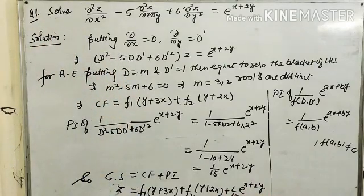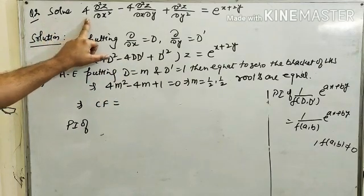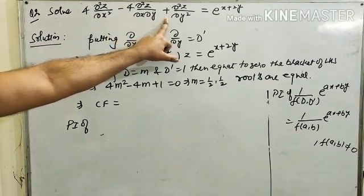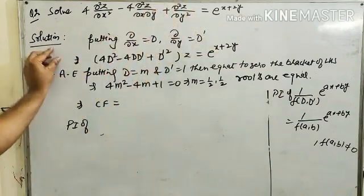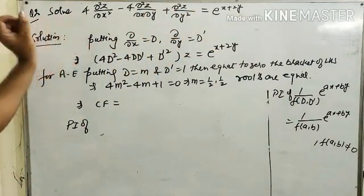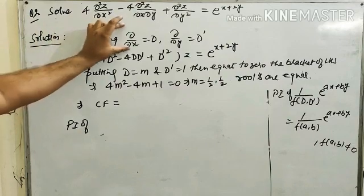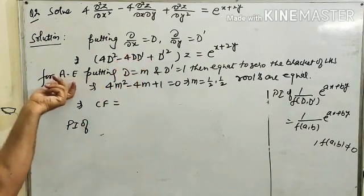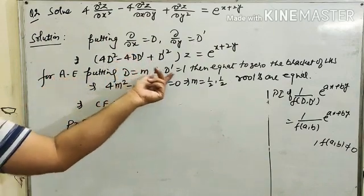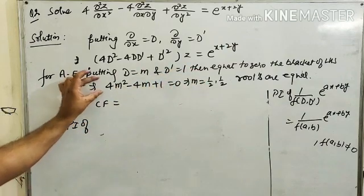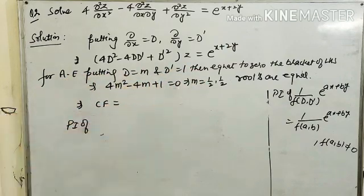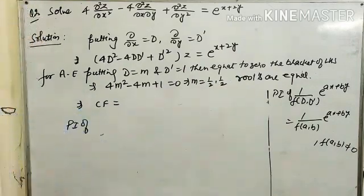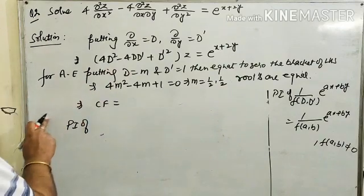Now Question 2: Solve 4 del²z/del x² minus 4 del²z/del x del y plus del²z/del y² equals e raised to power x plus 2y. Putting del/del x equals D and del/del y equals D', then for the auxiliary equation put D equals m and D' equals 1, giving 4m² minus 4m plus 1 equals 0. Solving this quadratic, we get m equals 1/2, 1/2 — that is, the roots are equal.